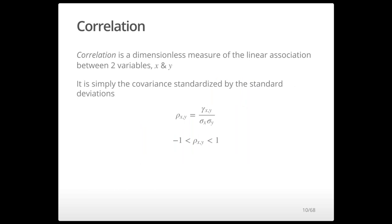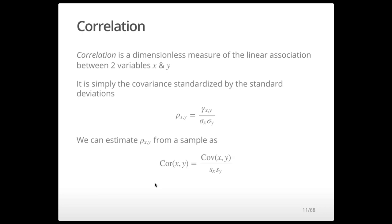Correlation is a dimensionless measure of the linear association between two variables, x and y. It is the covariance standardized by the standard deviations of x and y. We denote the correlation by rho: rho of x,y equals the covariance of x and y divided by the standard deviation of x times the standard deviation of y. Standardizing constrains the correlation to be between minus 1 and 1.